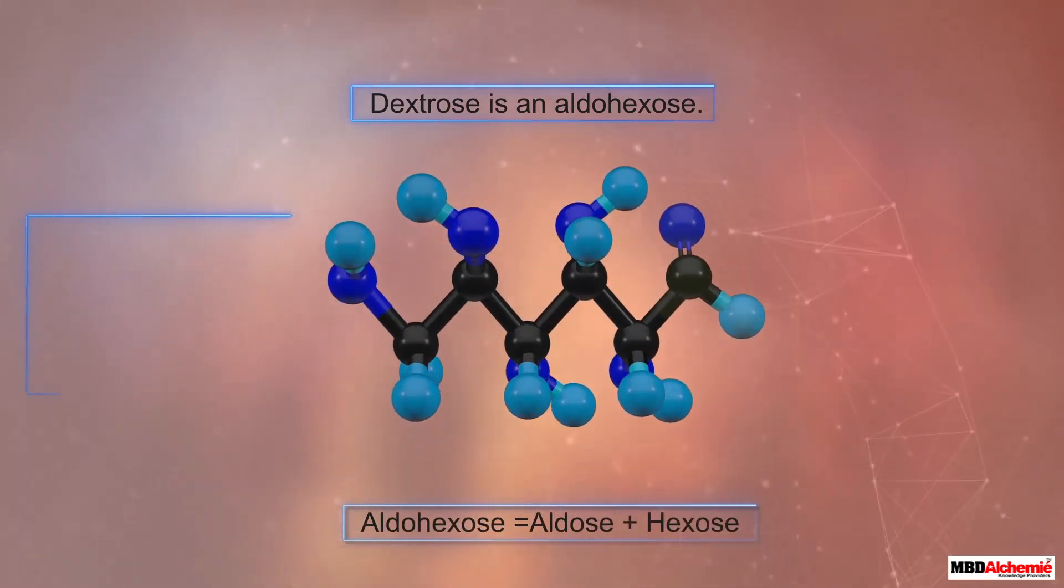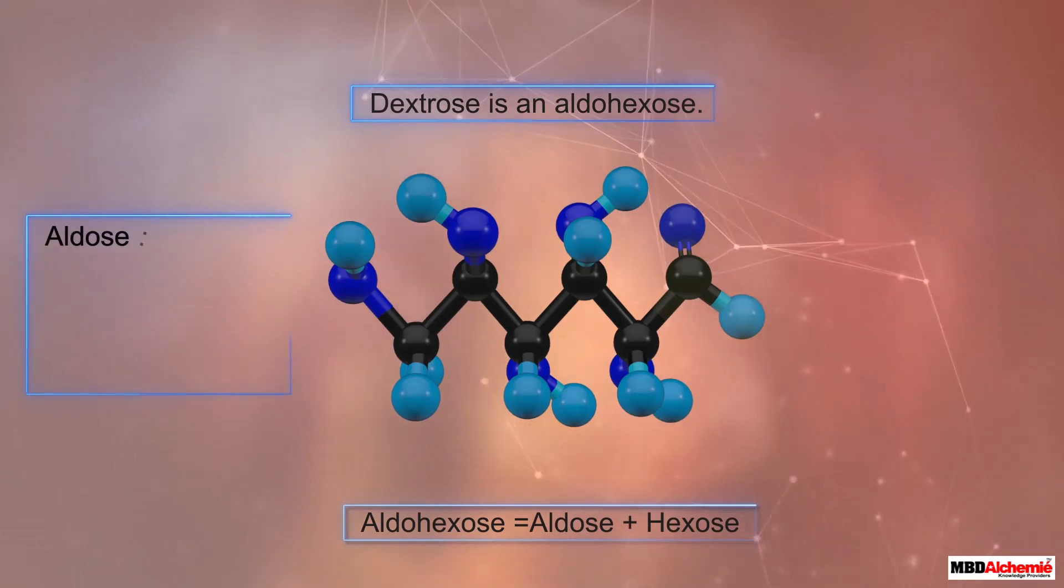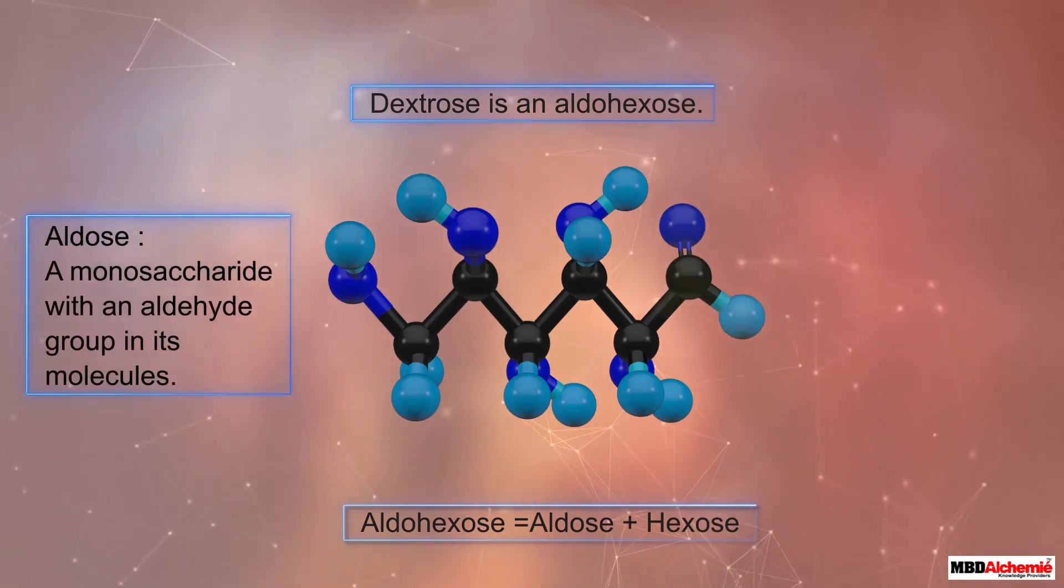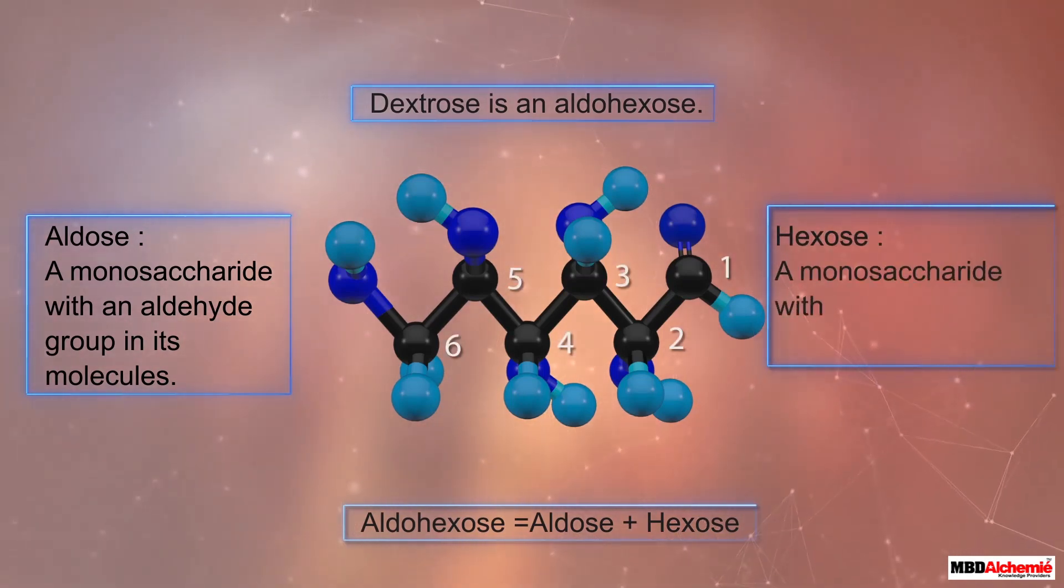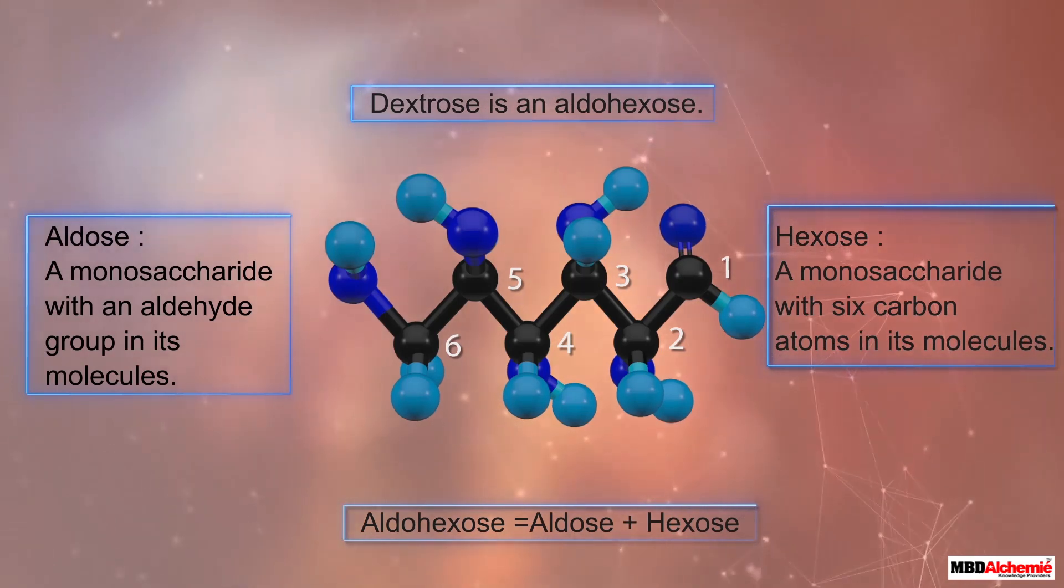This structure clearly shows that dextrose is an aldohexose. In other words, it is both an aldose and a hexose. An aldose is a monosaccharide with an aldehyde group in its molecules. A hexose, on the other hand, is a monosaccharide with six carbon atoms in its molecules.